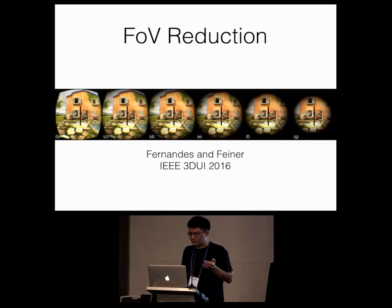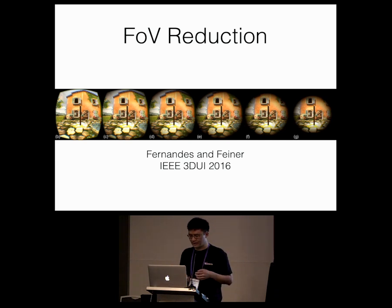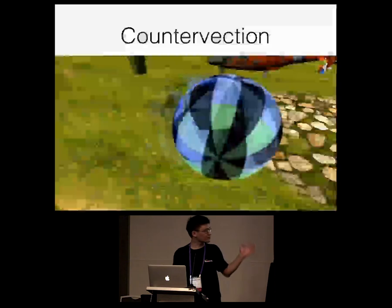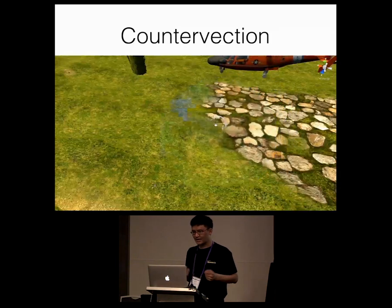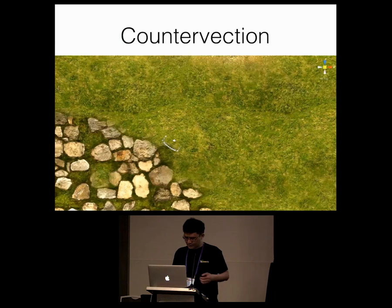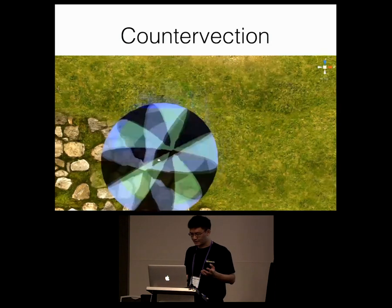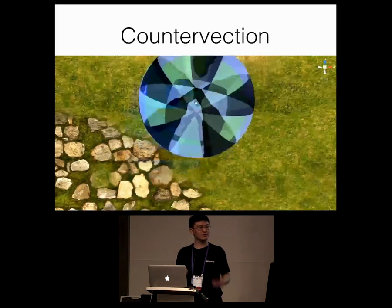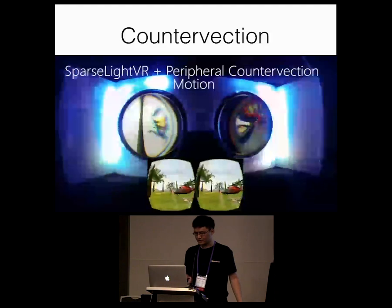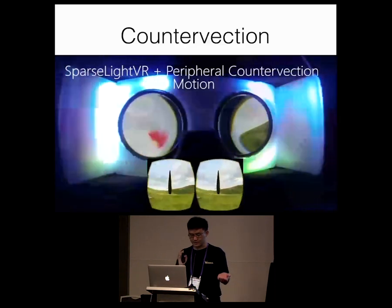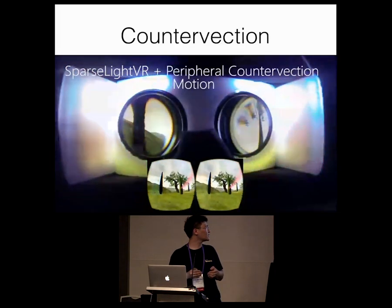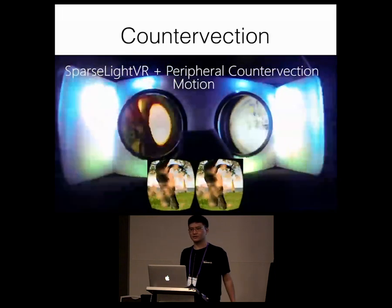We are not the only ones attempting motion sickness reduction through peripheral manipulation. Fernandes and Feiner developed a technique which shrinks the field of view gradually during motion — that works pretty well. We take a different approach to maintain the full field of view. Our countervection visualization is implemented as a series of blue and green stripes rendered on a pair of spheres only visible to the peripheral cameras. The textures on the spheres are dynamically adjusted to achieve the desired effect. We don't render the countervection visualization if the user is only moving their head, because head motion doesn't generate vection — only extrinsic motion does.